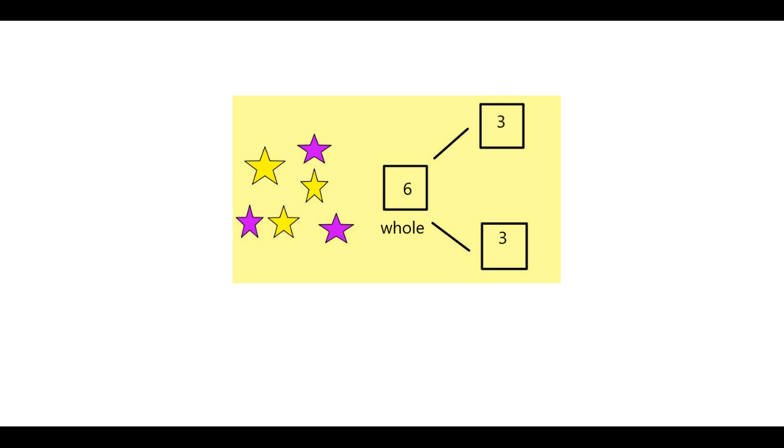So we're basically teaching the children here that you can break the whole up into two parts, three and three. And this could be equally different if there were two purple stars and four yellow stars. You would have a part of two and four. So that's just a way of breaking up the total number that you have there. And so here we have number bonds for six is three and three. So the children could also investigate different ways of making six by finding two different parts.